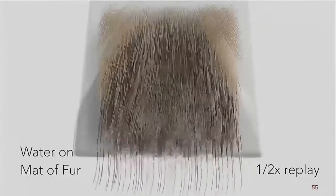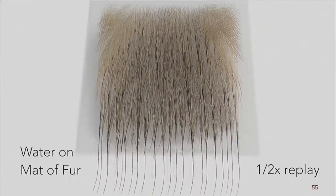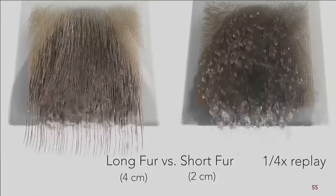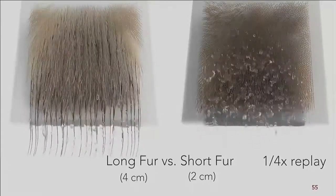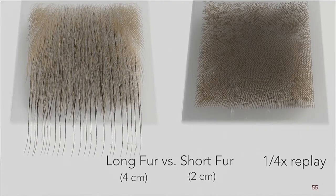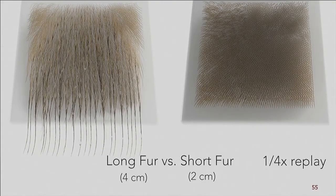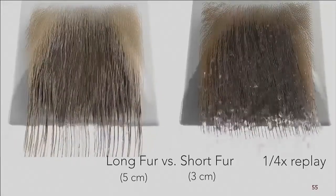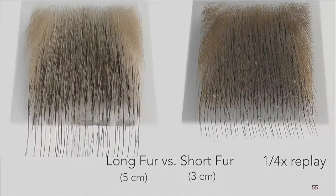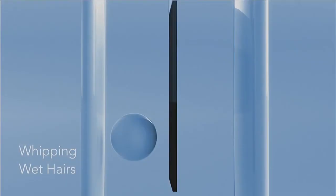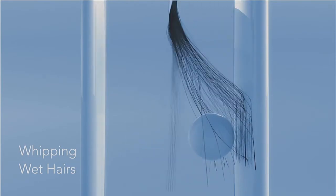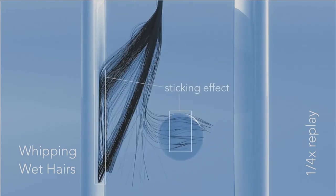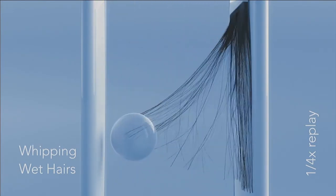This allows us to simulate complicated cohesion effects. We show a mat of fur with different lengths — as the fur gets longer, we see stronger cohesion behaviors. We also use curvature of the solid surface to calculate cohesion force between hair and solid objects, showing white hairs weeping where hair sticks to a plate and ball.